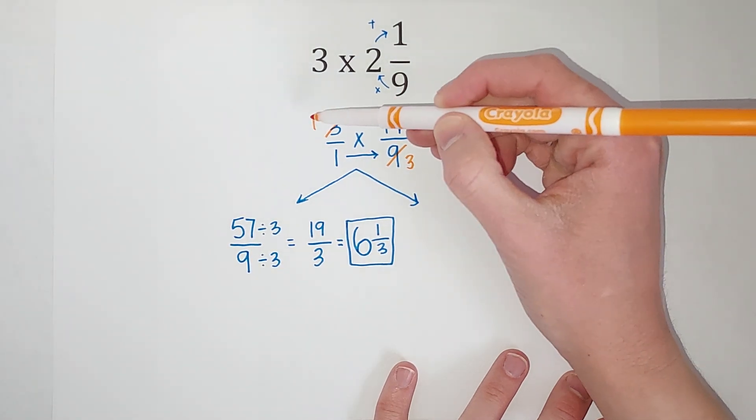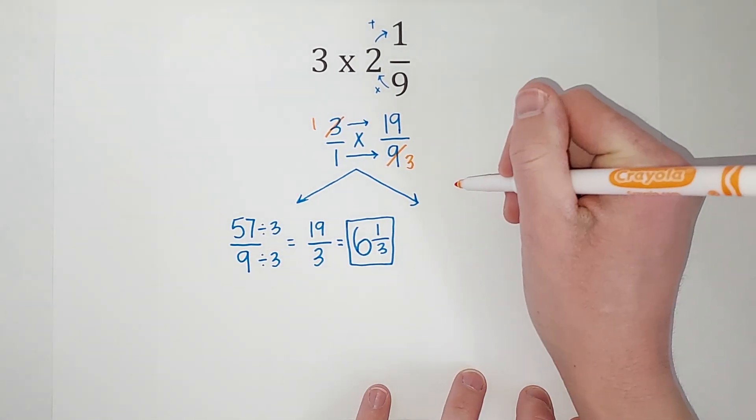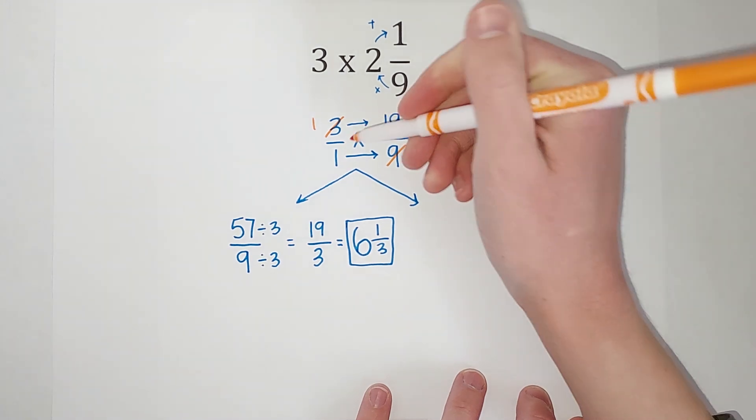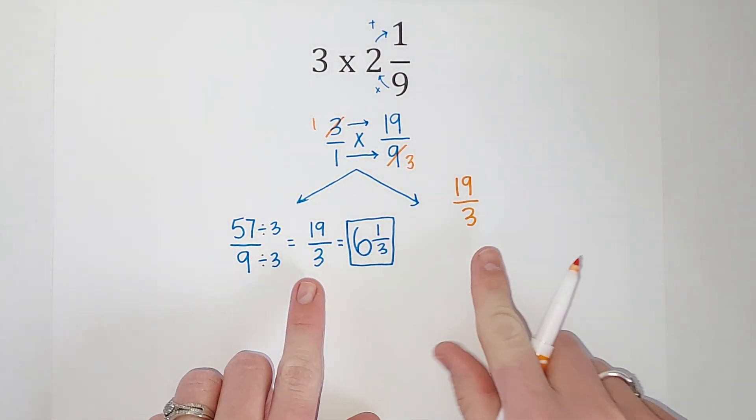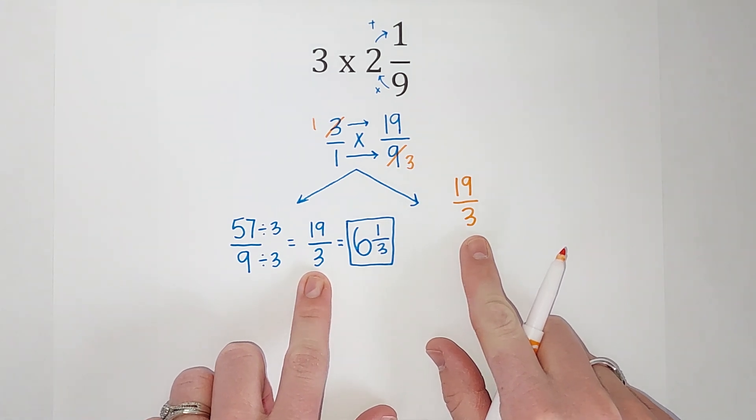So then when I multiply across, I get 1 times 19 gives me 19, and 1 times 3 gives me 3. And look at that. I just simplified beforehand.